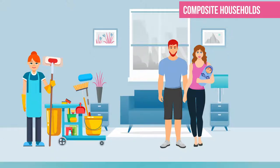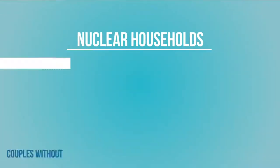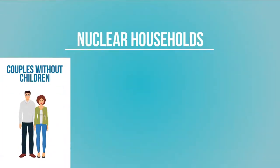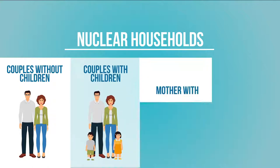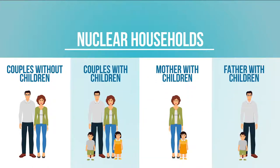There are 4 types of nuclear households: couples without children, couples with children, a mother living with her children, and a father living with his children.